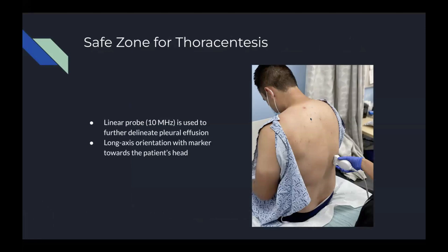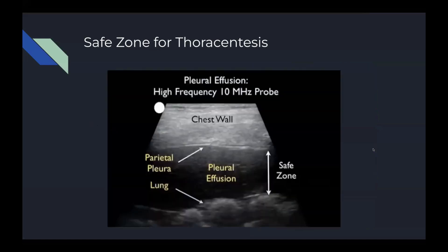As I mentioned before, there is a safe zone that you have to determine for thoracentesis, and this is done using the linear probe. You place the linear probe in a long-axis orientation with the marker pointed towards the patient's head. On this high-frequency probe image, you can see the chest wall, then the parietal pleura, and the pleural effusion between the parietal pleura and the lung. The anechoic pleural effusion is our safe zone — this is where you want the needle tip to stay to avoid puncturing the lung and to effectively extract the liquid.